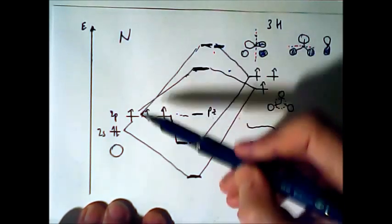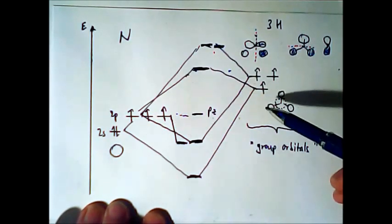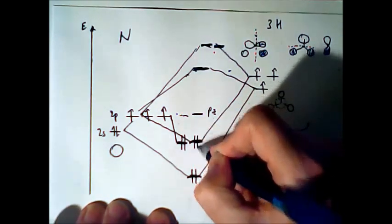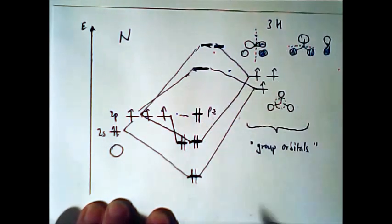Now we can add together our electrons. Here we have five. Here we have three. We need to fill eight electrons: one, two, three, four, five, six, seven, eight electrons.